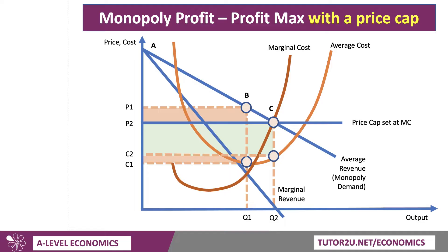Just taking this one stage further — with the cap at P2, you might want to introduce consumer surplus into your evaluation. Before the price cap, at price P1, consumer surplus was area A, B, P1. But after the price cap, consumer surplus increases to A, C, P2. So that's a really good way of building the analysis: a price cap has consequences for producer profit, but also potential consequences for consumer welfare. That lower price brings more people into the market and increases effective demand. So there's your price cap diagram with consumer surplus included — you might want to take a screenshot for your revision notes.